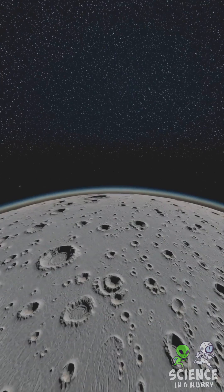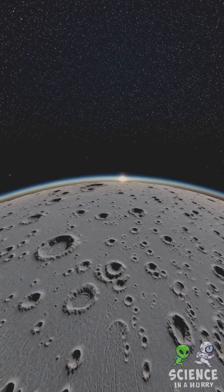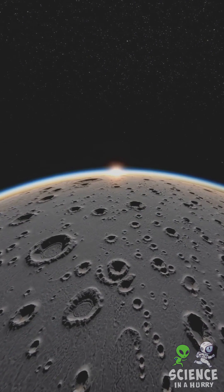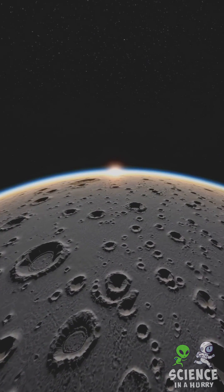Mercury's year lasts a swift 88 Earth days, but a single day, sunrise to sunrise, takes 176 Earth days due to its slow rotation and unique orbit.